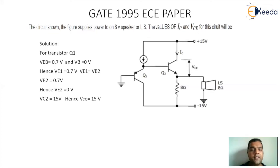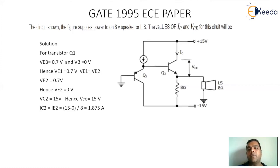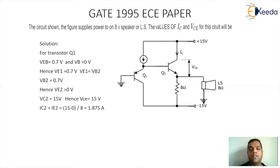Since the emitter potential is 0 V, IC equals IE equals potential difference divided by resistance, which is (15 minus 0) divided by 8, giving 1.875 amperes. So the value of IC (which is IC2) is 1.875 amperes, and the value of VCE2 is 15 volts. Therefore, the answer for this question is IC = 1.875 amperes and VCE = 15 volts.